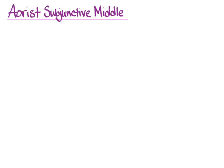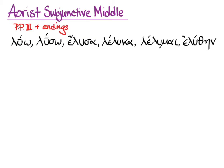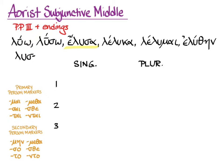The aorist subjunctive middle does not look like the aorist subjunctive passive, because we're going to go to the third principal part, where all aorist middle forms come from, and then we'll have some endings. We'll need the un-augmented stem from the third principal part, because we won't be indicative anymore. So we take off the alpha and we take off the epsilon. We need the primary middle-passive person markers, because the primary association of the subjunctive trumps the secondary association of the aorist, with lengthened subjunctive vowels.